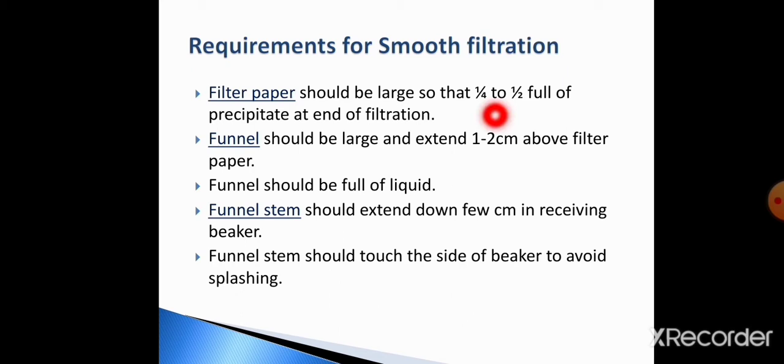I told you earlier that filtration by glass funnel and filter paper is a very slow and time-consuming process. We may increase rate of filtration by suction pump. But to do smooth filtration, certain conditions need to be fulfilled. Number 1, filter paper should be of large size so that it is one-fourth to one-half full of precipitate at the end of filtration.